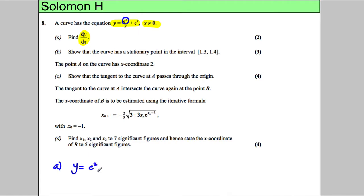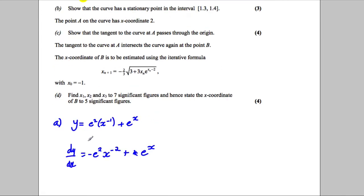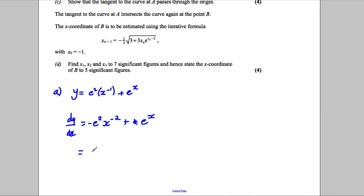So I'm going to rewrite this as y equals e squared times x to the power of negative 1 plus e to the x. Then differentiating: dy/dx — e squared, thinking of it as a number, bring down the negative 1, so negative e squared times x to the negative 2, plus e to the x. That is dy/dx, which I could write as negative e squared over x squared plus e to the x.